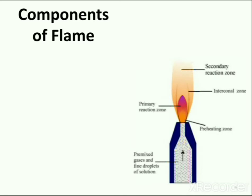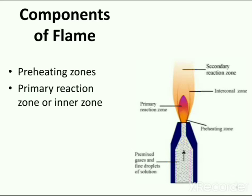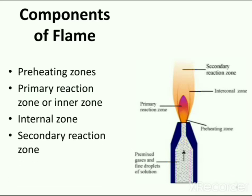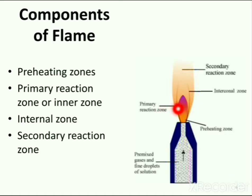The flame is a very important part of the flame photometer. It consists of several components: the preheating zone, the primary reaction zone or inner zone, the interconal zone, and the secondary reaction zone. In the preheating zone, the combustion mixture is heated to the ignition temperature by thermal conduction from the primary reaction zone. The primary reaction zone is about 0.1 mm thick at atmospheric pressure; there is no thermodynamic equilibrium in this zone, the concentration of ions and free radicals is very high, and this region is not used for flame photometry.